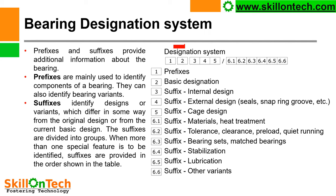In the designation system: position 1 is for prefixes, 2 for basic designations, 3 and 4 for suffixes — 3 and 4 for internal design, 4 for external design, 5 for suffix cage design. Position 6.1 covers material and heat treatment; 6.2 tolerance, clearance, preload, and quiet running (noise); 6.3 bearing sets and matched bearings; 6.4 stabilization; 6.5 lubrication; 6.6 other variants of the bearing.